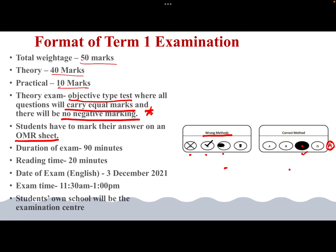CBSE will be checking the OMR sheets based on two techniques: OMR scanning and ICR scanning. OMR is Optical Mark Recognition, which checks the darkened circles, while ICR — Intelligent Character Recognition — will be used to read the fifth circle where a written answer is provided.